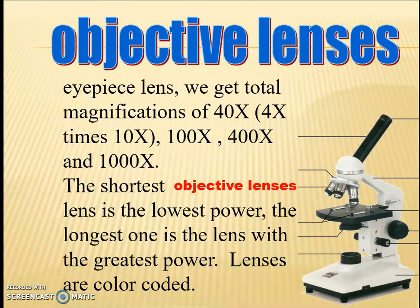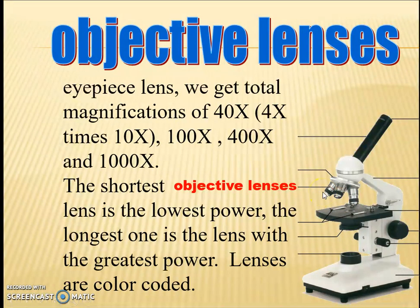When using the microscope, you are going to start with the shortest objective lens at the lowest power, and gradually work your way up to the greatest power. These lenses are also color coded for easy identification.